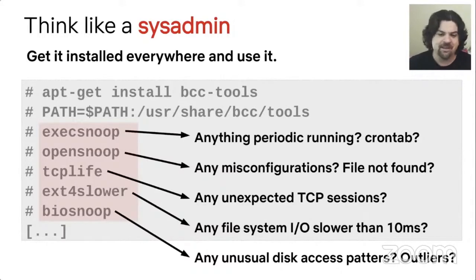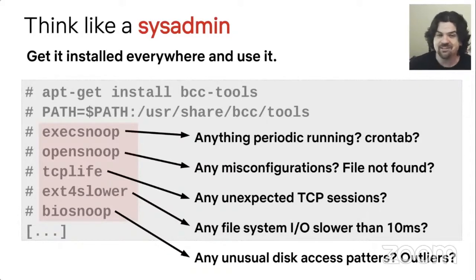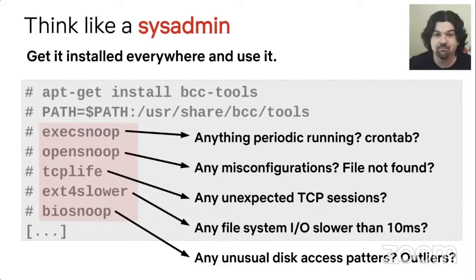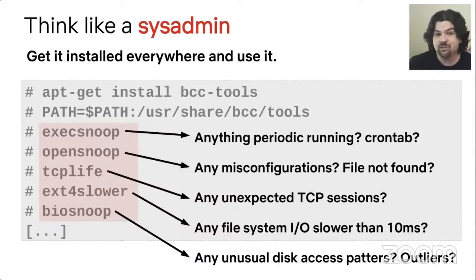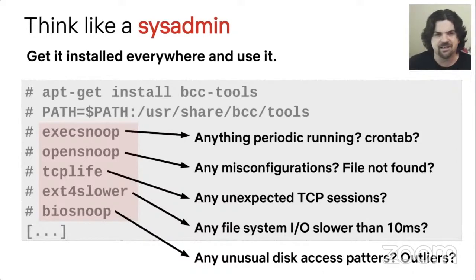When you run execsnoop, that will help you identify problems of periodic running processes. You might be surprised at what you find — things you've forgotten about that are in crontab, that are perturbing the production performance of the system, increasing latency and increasing those tail latencies. Opensnoop is another great tool to run to find misconfigurations when the system is looking for files that don't exist, that maybe used to exist but have since been lost in a system migration.